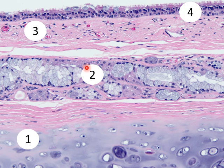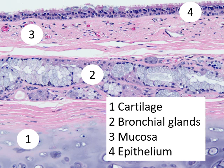These glands have a duct that opens onto the surface, connecting with the lumen of the bronchus. Number three is the mucosa — or mucosa and submucosa combined. The small dot circles are capillaries, with red blood cells inside. The pink material is collagen, and the small nuclei are fibroblasts. Number four is the surface respiratory epithelium.